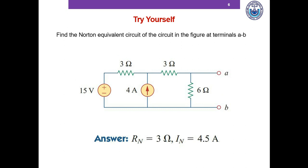Hopefully we've been able to solve this. Again, to determine the Norton current, we short circuit the terminal. The 6 ohm resistance gets cancelled out because it's in parallel with the short circuit, so we can just remove the 6 ohm resistor. We then determine the current using source transformation, nodal analysis, or mesh analysis — whatever you're comfortable with. We end up with a Norton current of 4.5 amperes.